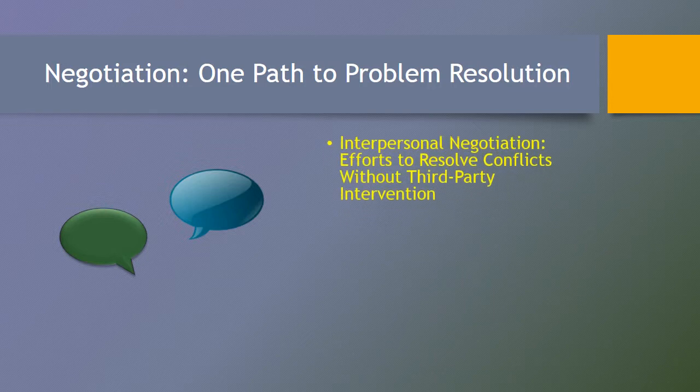Negotiation is an approach that involves efforts to resolve conflicts without third-party intervention. People are trying to work things out between them without an outside negotiator, a mediator, the courts, or a counselor, which all involve a formal intervention. Informal intervention could take the form of a friend or a neighbor who is trying to help out. We'll save third-party intervention for the next unit, as we're focusing on negotiation as one path to problem resolution without bringing in a third party.